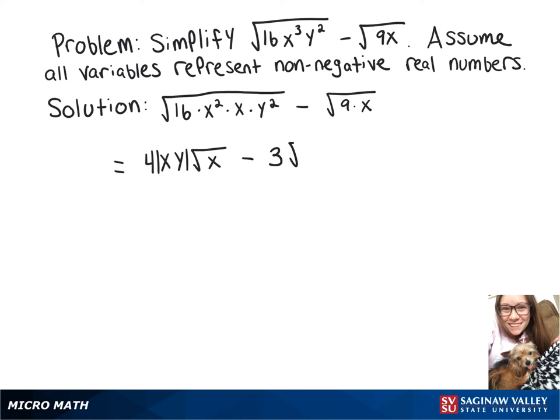Now over here, the square root of 9 is 3, and then underneath the radical, you've still got x. So since both of these things are being multiplied by the square root of x, we can combine what's in front of them.